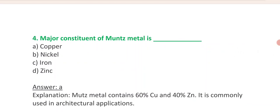Muntz metal contains 60% copper and 40% zinc. And its major use in architectural applications due to its hardness. And sometimes there will be 55% copper and 45% zinc. So please note it.